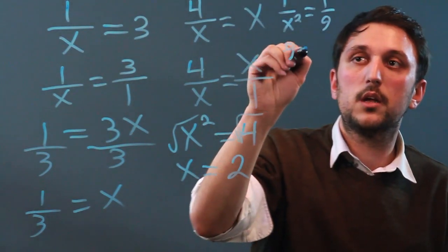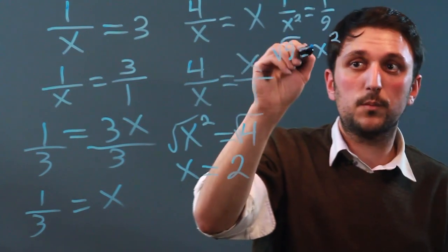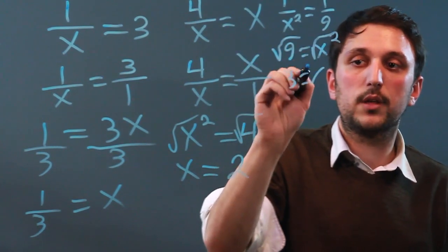9 times 1 is 9, equals x squared times 1, which is just x squared. We take the square root, and we get 3 equals x.